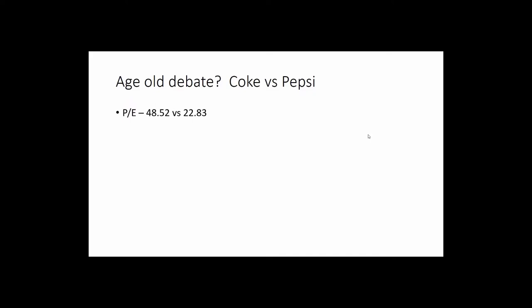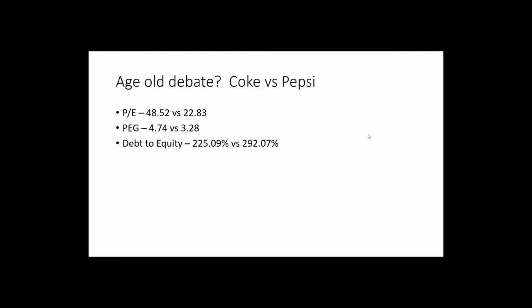Looking at the PEG ratio, Coke versus Pepsi: 4.74 versus 3.28. This tells us that Coke has, at least by expectation, better growth going forward. Again, we have to compare all these metrics.